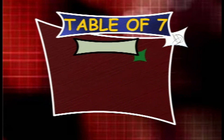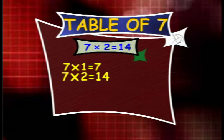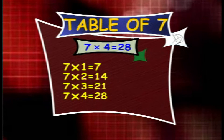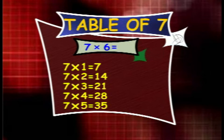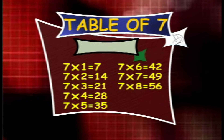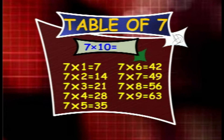Table of 7. 7 1s are 7, 7 2s are 14, 7 3s are 21, 7 4s are 28, 7 5s are 35, 7 6s are 42, 7 7s are 49, 7 8s are 56, 7 9s are 63, 7 10s are 70.